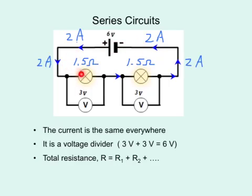In a series circuit, current is the same everywhere. Voltage is divided up by the components. Each bulb gets 3 volts. And the total resistance is simply the summation of the individual resistances. 1.5, 1.5, the total resistance should be 3 ohms.